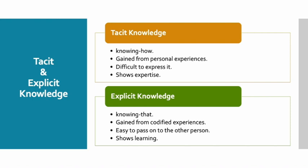Iske liye hum ek example le sakte hain: maa ki famous recipe kaise banayi jaye. Maa cooking mein expert hai, toh unke knowledge ko tacit knowledge ke antargat rakheinge. Maa ne recipe banane ki vidhi batayi, aur beti ne sabhi steps ko follow karte huwe recipe banayi. Lekin jab taste kiya, to paaya ki jaisi maa is dish ko banati hai, vaisi nahi bani — kuch na kuch missing hai. Toh jo kuch na kuch missing lag raha hai, vahi maa ki speciality hai, aur isse tacit knowledge kaha jayega, kyonki is knowledge ko maa ne experience se gain kiya hai aur isse aasani se transfer nahi kiya ja sakta. Ek experienced teacher ka knowledge tacit knowledge ke antargat aayega, jabki ek new teacher ka knowledge explicit knowledge ke antargat aayega.